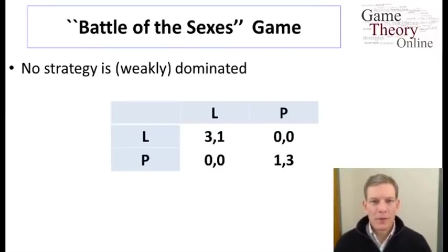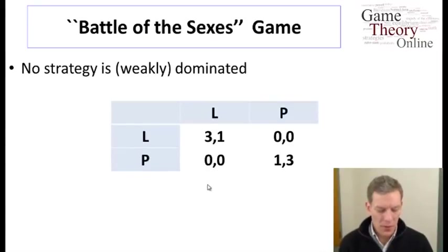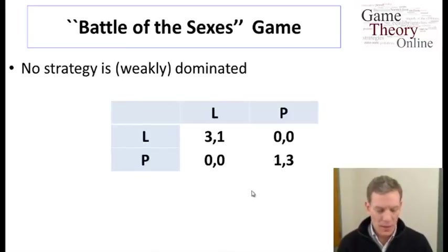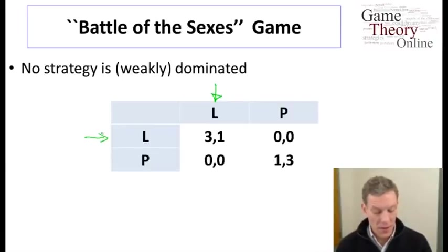Let's look at a couple of examples and get some feeling for equilibria. Here is the battle of the sexes game. We have no dominant strategies, so the decision of the row player depends on what the column player is doing. Whether they choose L or P depends on whether they think the other player is going to choose L or P. If the column player is choosing L, then the best response of the row player is L.